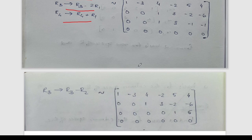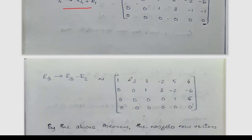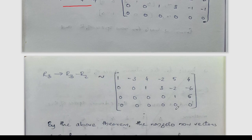R3 becomes R3 minus R2. After reduction, the matrix has first row 1, 3, 4, 2, 5, 4; second row 0, 0, 1, 3, 2, 6; third row 0, 0, 0, 0, 1, 5; and the last row is all zeros. This is our reduced row echelon form.